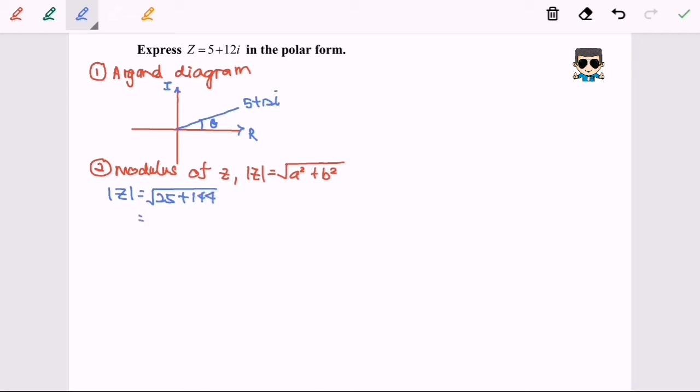So after we simplify the situation, we will have square root of 169, which is equal to 13 for the modulus of z.